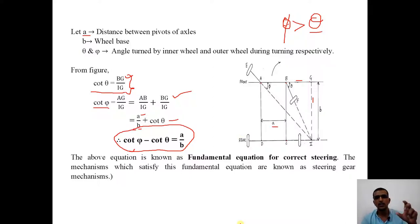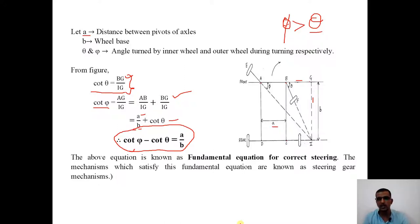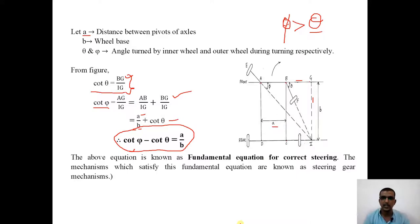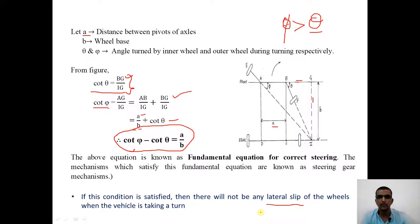For all angles, if LHS equals RHS we say that is an ideal steering gear mechanism. Only for particular values of theta and phi that equal a/b do we still call it a steering gear mechanism, but with certain reservations. If the condition is satisfied, there will be no lateral slip or skid of the wheels when the vehicle takes a turn — that is the positive outcome we intend from the fundamental equation.